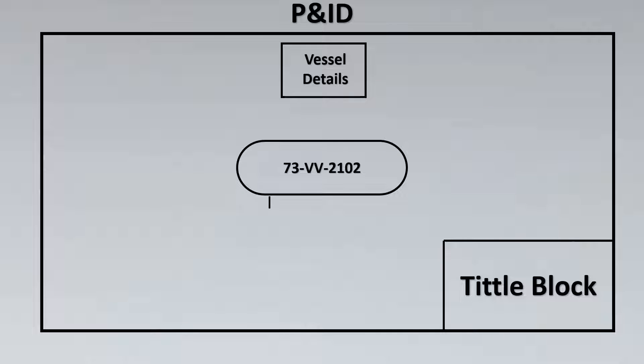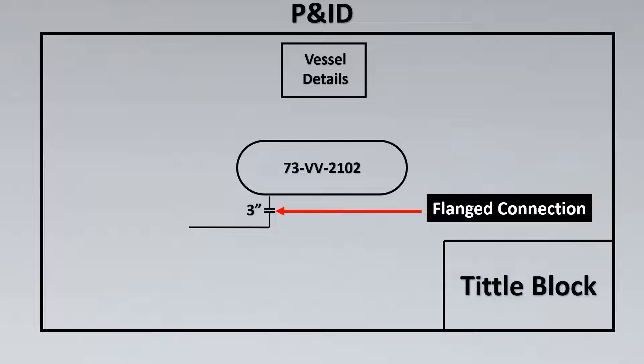Now let us look at the next thing which is the connection. Now if you see here something is mentioned here called 3 inch, and this symbol stands for a flanged connection. So it's a flanged connection which is coming out from the vessel, and then let's see there's another symbol to it.